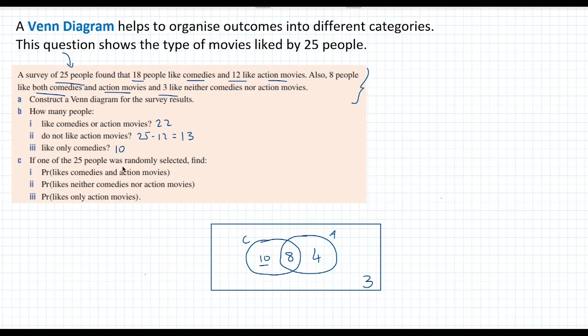If one of the 25 people was randomly selected, find the probability that the person likes comedies and action movies. Well, there are 8 people who liked it out of a total of 25. So that's the probability. Probability that they like neither comedies nor action movies. So there are 3 people that like neither. So that's going to be 3 out of 25 total people. And probability that they like only action movies. So 4 people like only action movies. So that's going to be 4 out of 25.